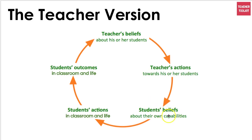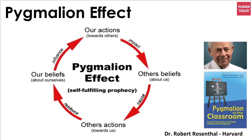In a teacher context, the cycle works like this: our belief about a challenging student influences how we act towards them, which reinforces the student's belief about their own capabilities. This leads to student actions — they start to believe they're not good enough, they misbehave, they doubt their abilities — and those outcomes then reinforce the teacher's original belief.